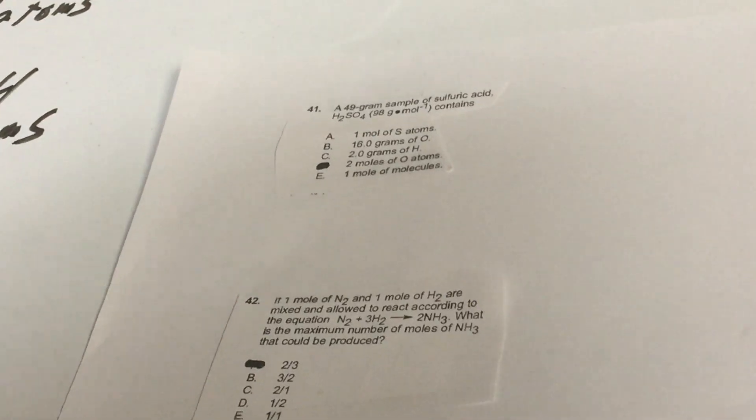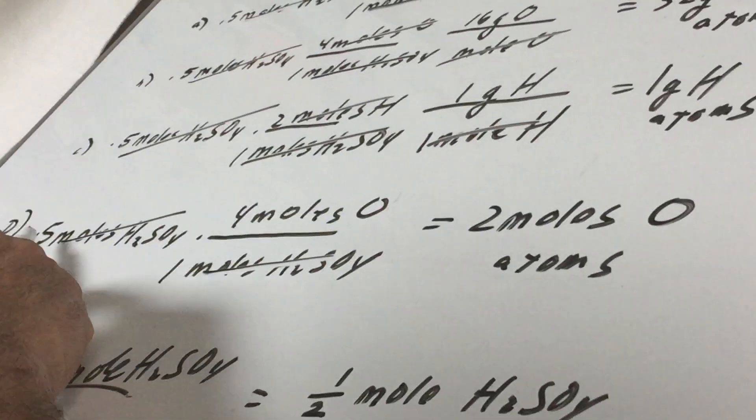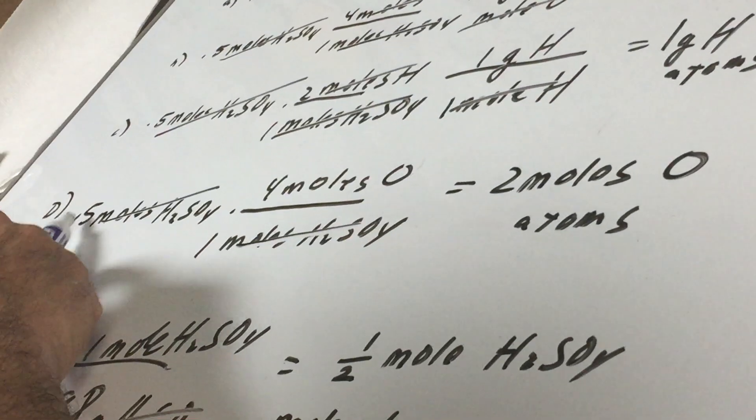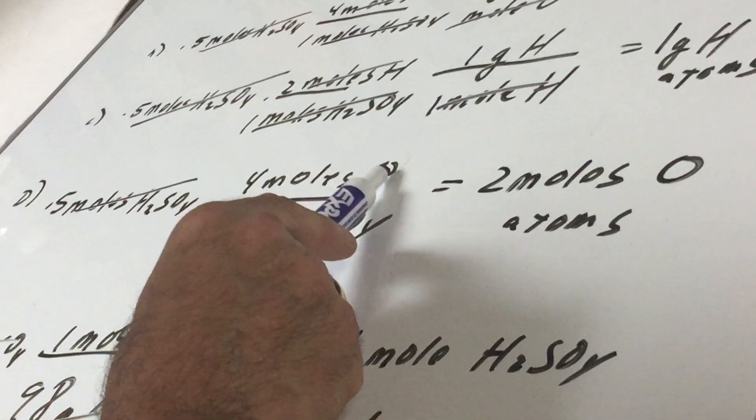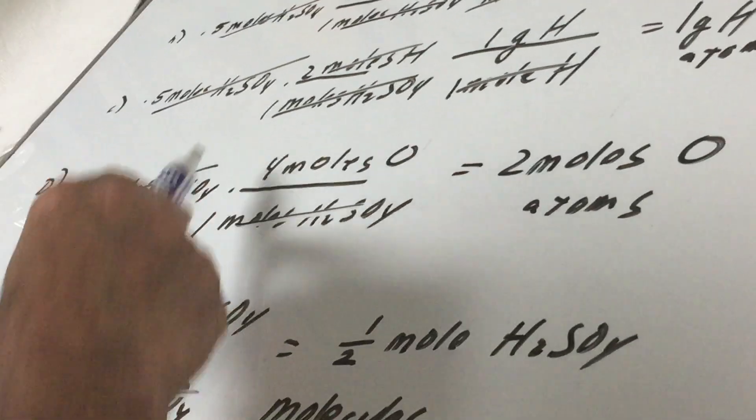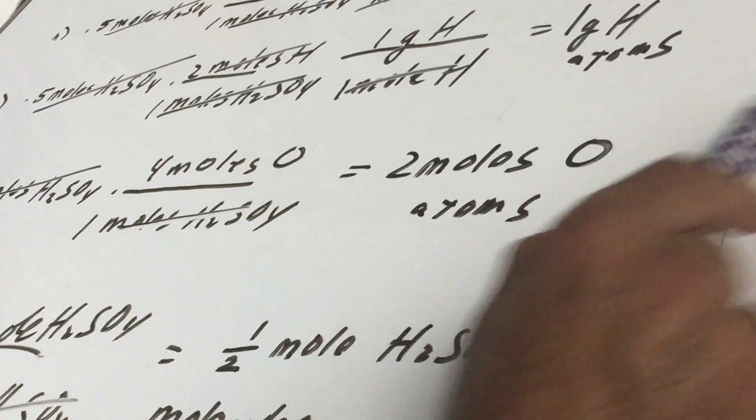How about D? Two moles of oxygen atoms. This is a long problem, I admit. Now, is there two moles of oxygen atoms? You have 0.5 moles of H2SO4. Again, there's four moles of O atoms, or just O I wrote, in a mole of H2SO4. And that gives me the moles of the O atoms. And it's two moles. That would work. And then just for clarity,